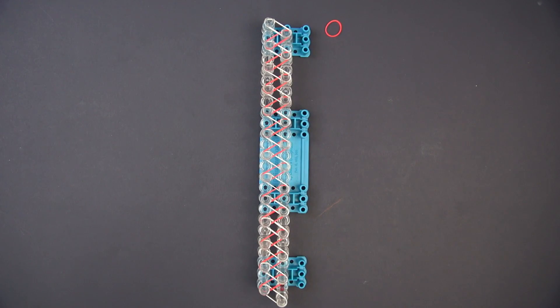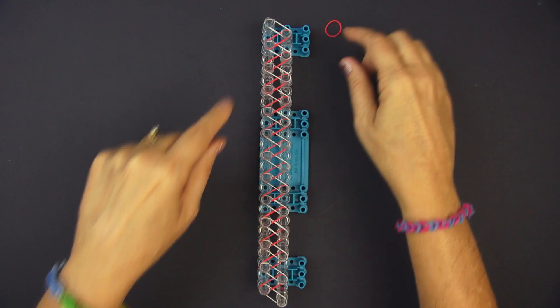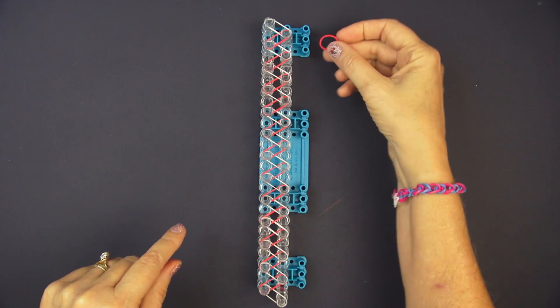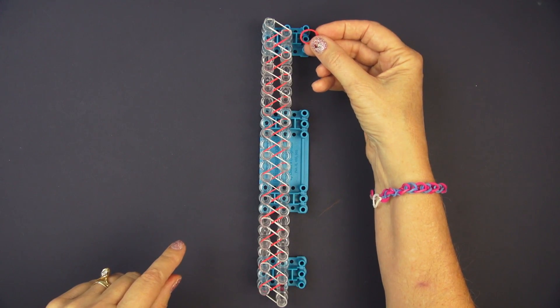This is how the loom should look now that you've placed all the rubber bands on here. You should have one rubber band left over and that one will be used as part of the clasp.